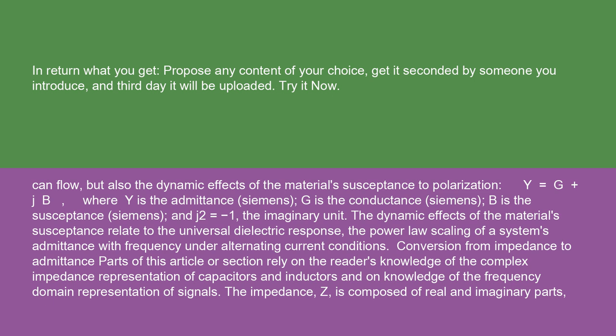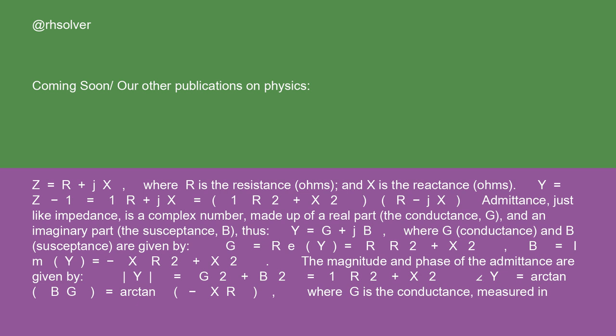Conversion from impedance to admittance: Parts of this article or section rely on the reader's knowledge of the complex impedance representation of capacitors and inductors and on knowledge of the frequency domain representation of signals. The impedance Z is composed of real and imaginary parts. Z = R + jX, where R is the resistance in ohms, and X is the reactance in ohms.